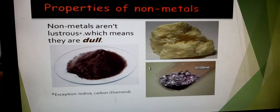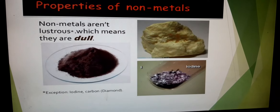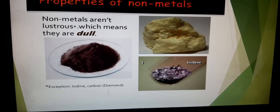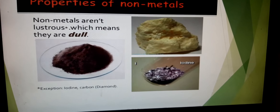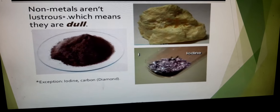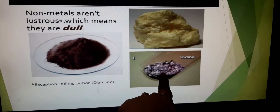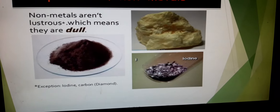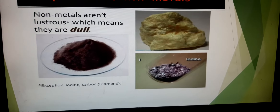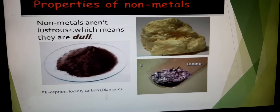The next property of non-metals is luster or shiny appearance. Metals are usually lustrous in nature, but non-metals are non-lustrous — they are dull and not shiny. For example, the yellow colour sulphur is a non-metal which is not shiny. However, there are exceptions: iodine is a non-metal which has luster and is shiny. Also, diamond is a form of carbon and is very lustrous. So generally non-metals are dull and non-lustrous, except iodine and diamond.